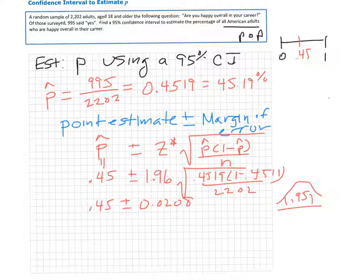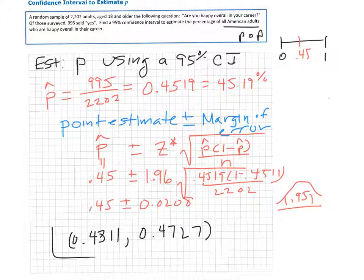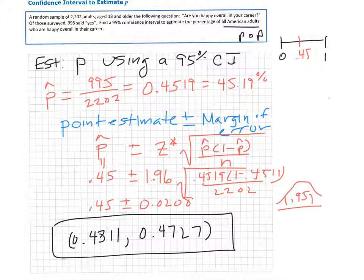If you take 0.45 and subtract off 0.0208, you get 0.4311. And if you add on 0.0208 to your point estimate, you get 0.4727. This is your 95% confidence interval.